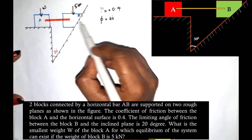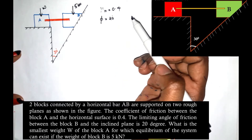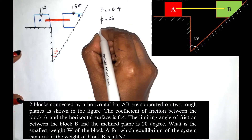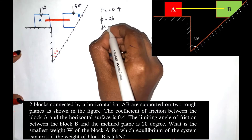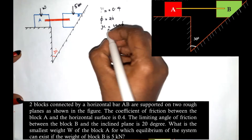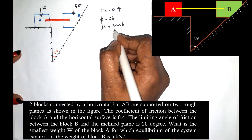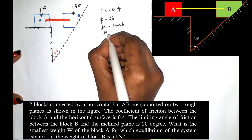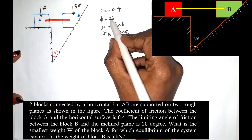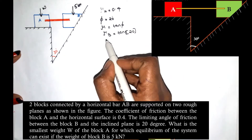We need to find the angle of friction. From the relation, mu equals tan(phi). For block B, mu_B equals tan(20°), since the limiting angle of friction phi is 20 degrees. This gives us the mu_B value we need.